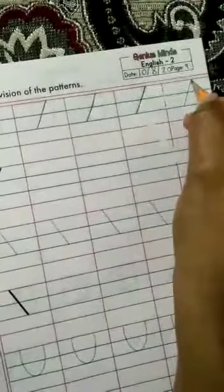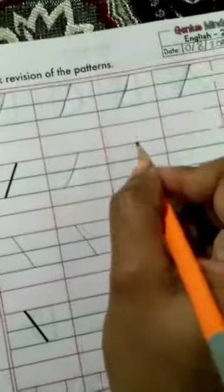Right to left. Yes, this is slanting line. Yes, see here also, slanting line, right to left.